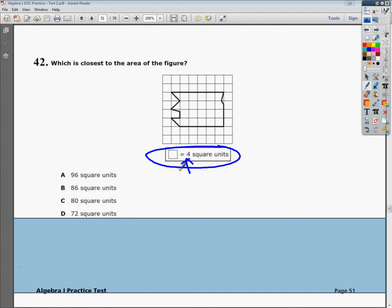My suggestion in this question—I mean, you could break it down into parts and try to do the area of triangles and everything—but my suggestion is you count all the whole boxes that you can, count the halves, two halves would be a whole, and then just kind of guesstimate around. Usually the numbers are far enough apart that you can feel comfortable doing it.